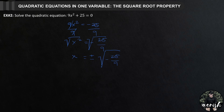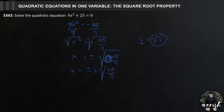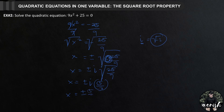Since the negative sign is inside the radical, we can bring it out as the imaginary number i, where i equals the square root of negative 1. So pag nakakita tayo ng ganitong value, imaginary number yan — walang square root ang negative 1. So this becomes plus or minus i times square root of 25 over 9. The square root of 25 is 5 and the square root of 9 is 3, so x equals plus or minus 5 over 3 times i.